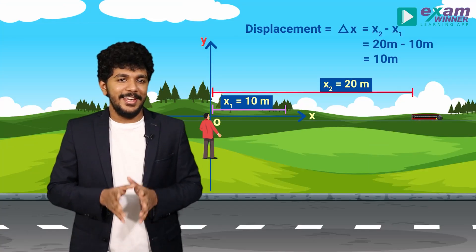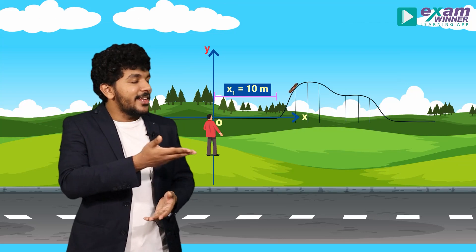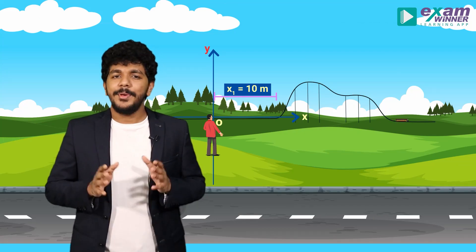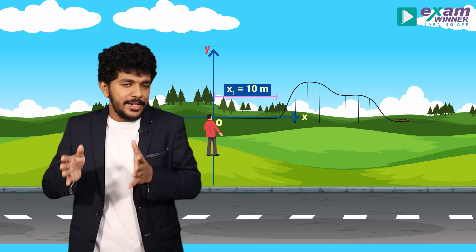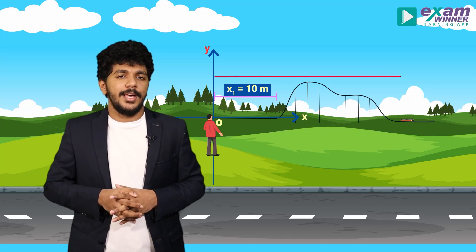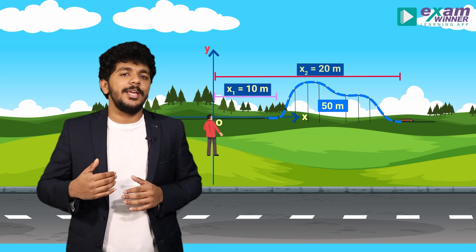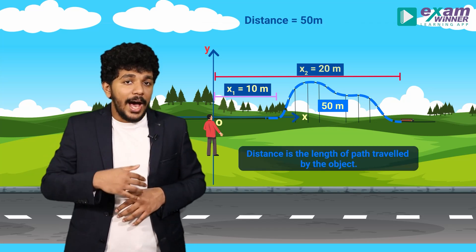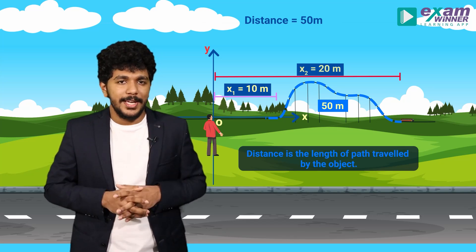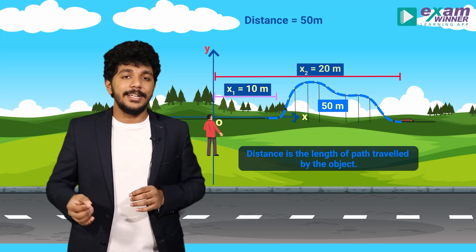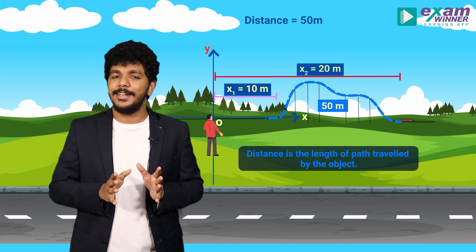Imagine a train is moving along a curved path. The initial position x1 is 10 meters, and the final position x2 is 20 meters — but the path is not a straight line. The actual length traveled by the train along this path is 50 meters. So the distance traveled is equal to 50 meters.